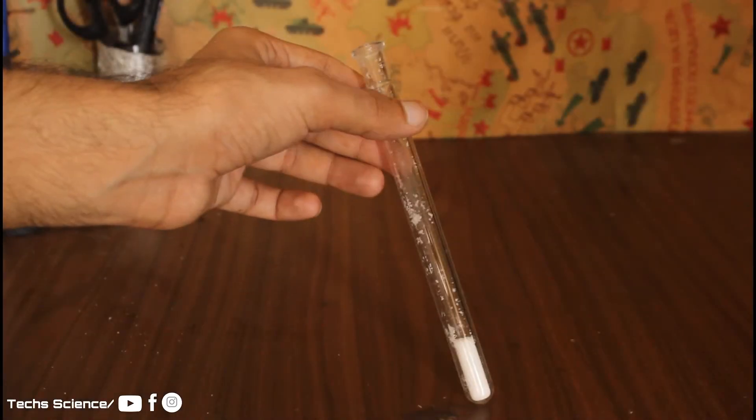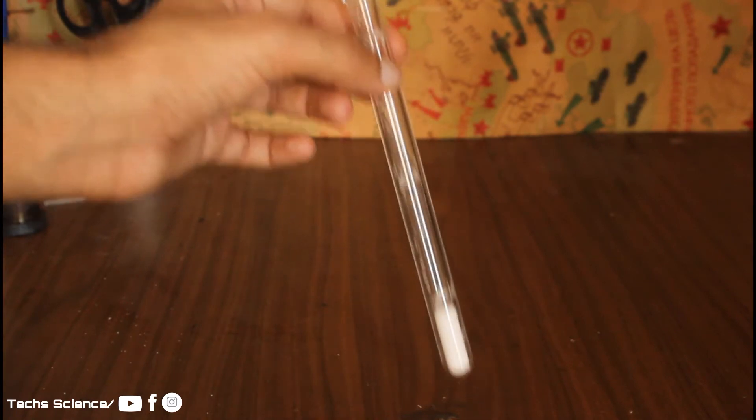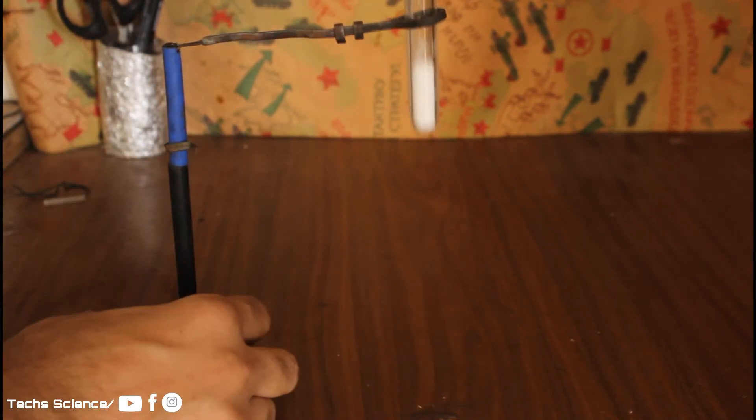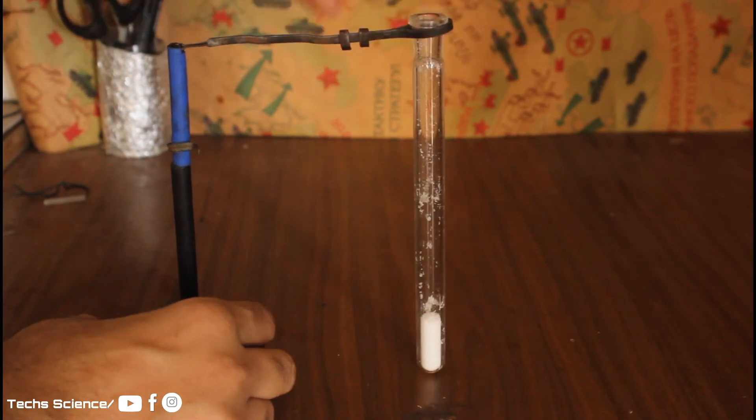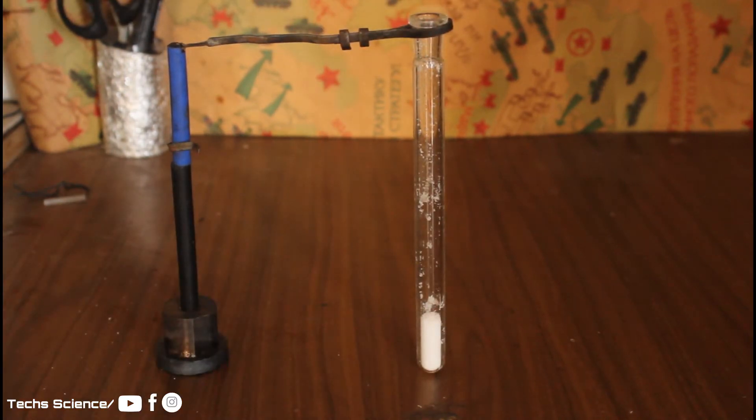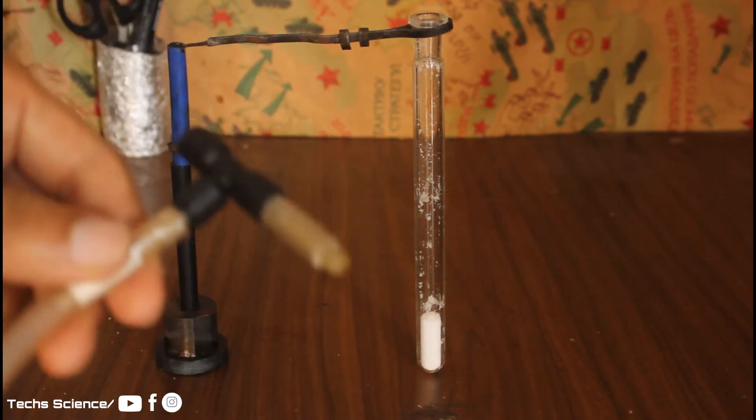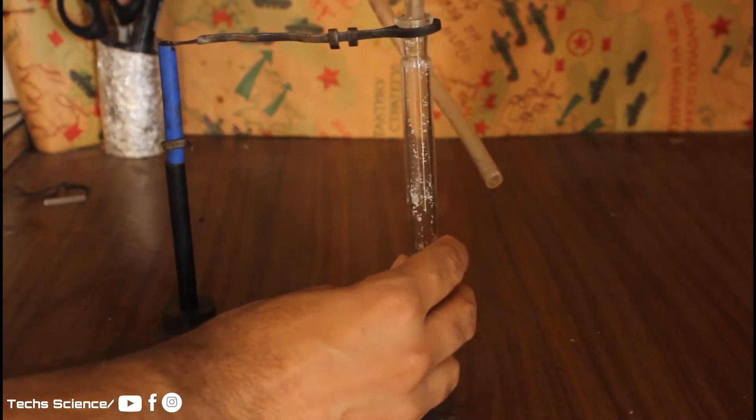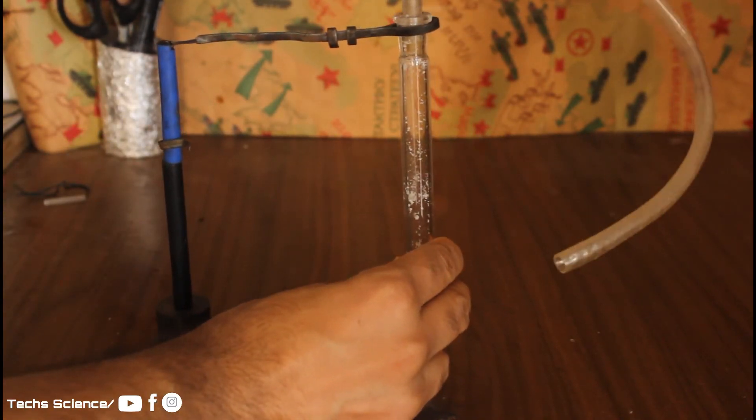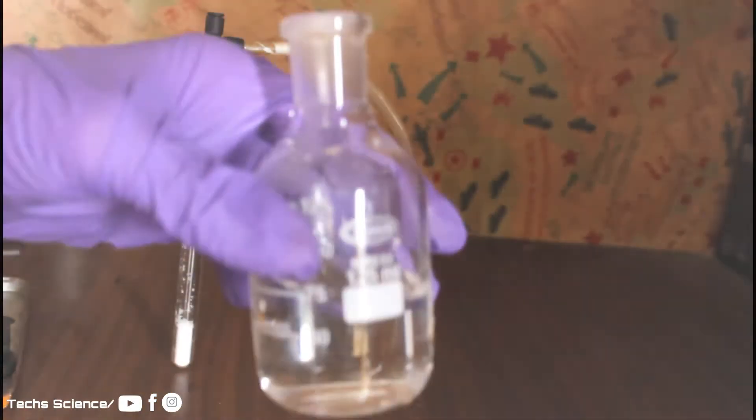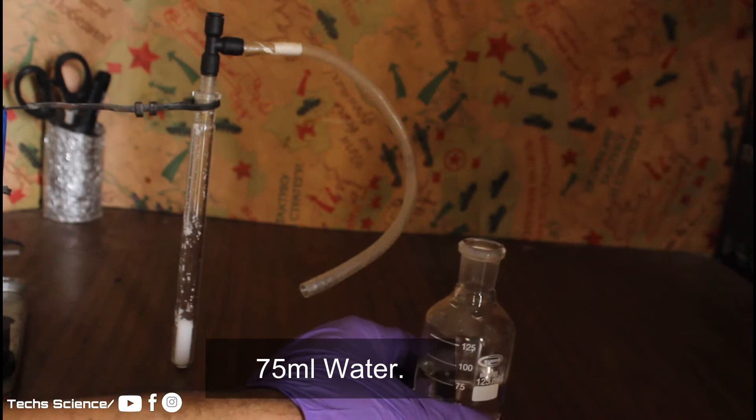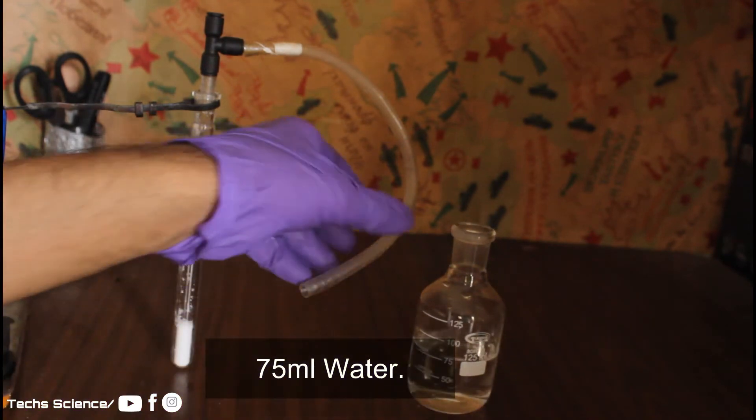I have taken common salt, or sodium chloride, in this test tube. And I am using this three-way tube connector where one end is going inside the test tube, the opposite will be used to pour the sulfuric acid, and the remaining one is to collect the HCl gas.